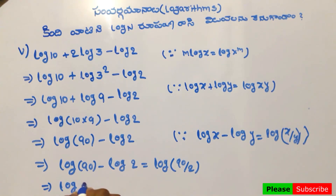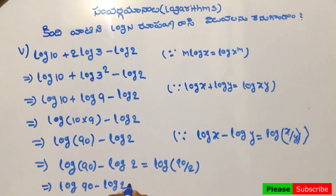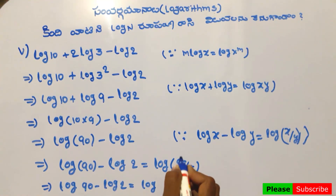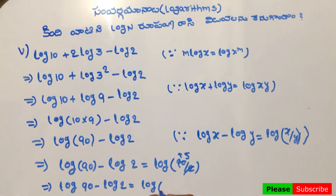Log 90 minus log 2 equals log 45. Therefore the answer is log 45.